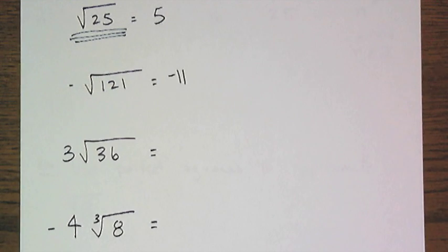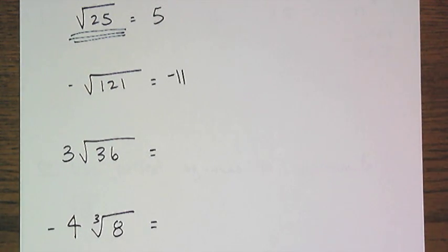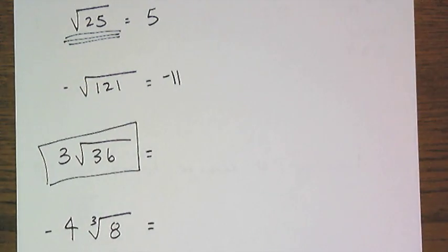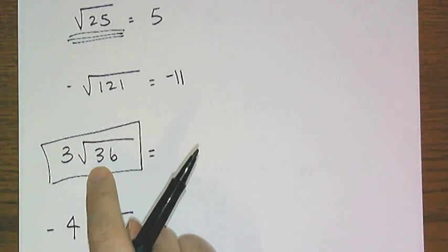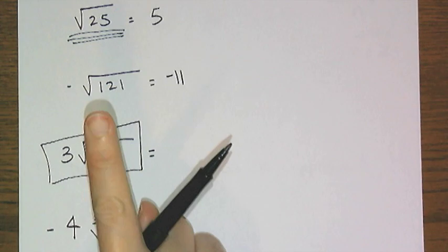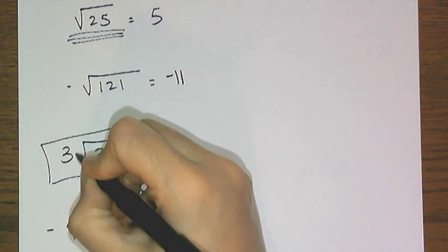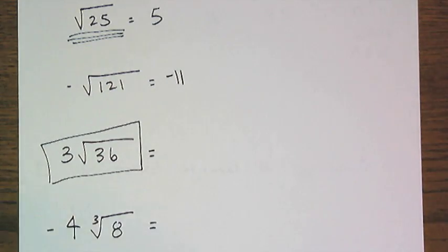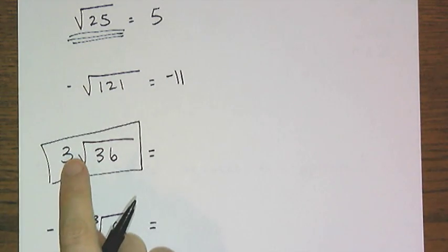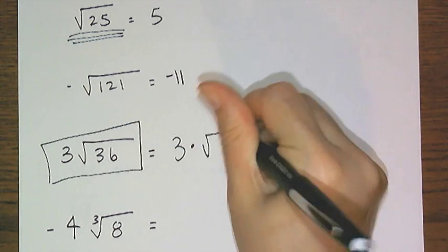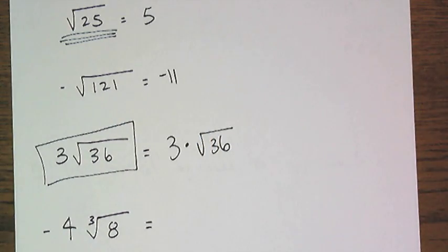Now one thing we noticed last year that kids were having trouble with is when they saw something written like this. So what does this mean? The 3 on the outside is not an index for the radical. If it were, I would have written it really tiny above the check. This means something else. And what this means is 3 times the square root of 36.